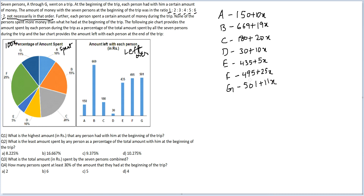When you look at these amounts, the smallest amount present with anyone will necessarily be D or E. D is definitely lower than A, B, C, F, and G. But because there is 5X for E and 10X for D, we don't know which of these two will be the smallest.